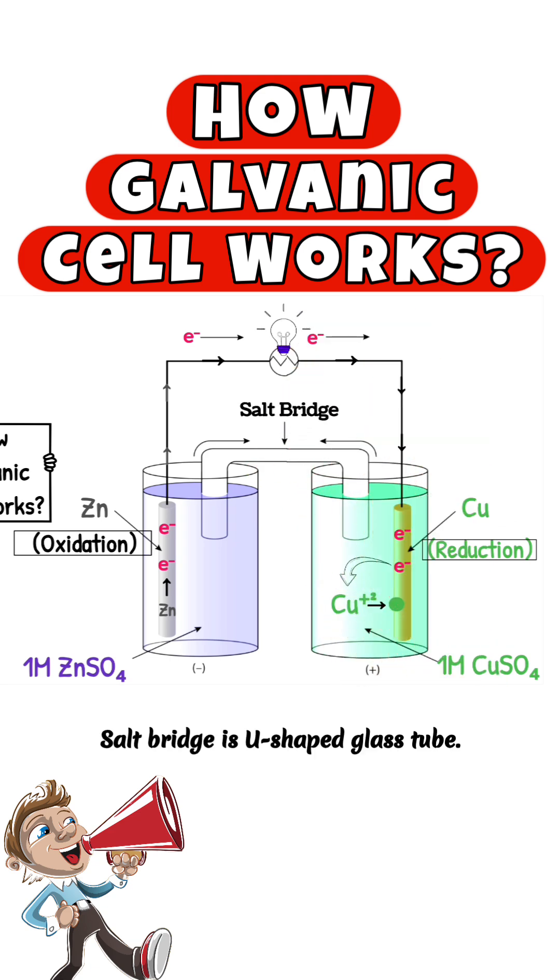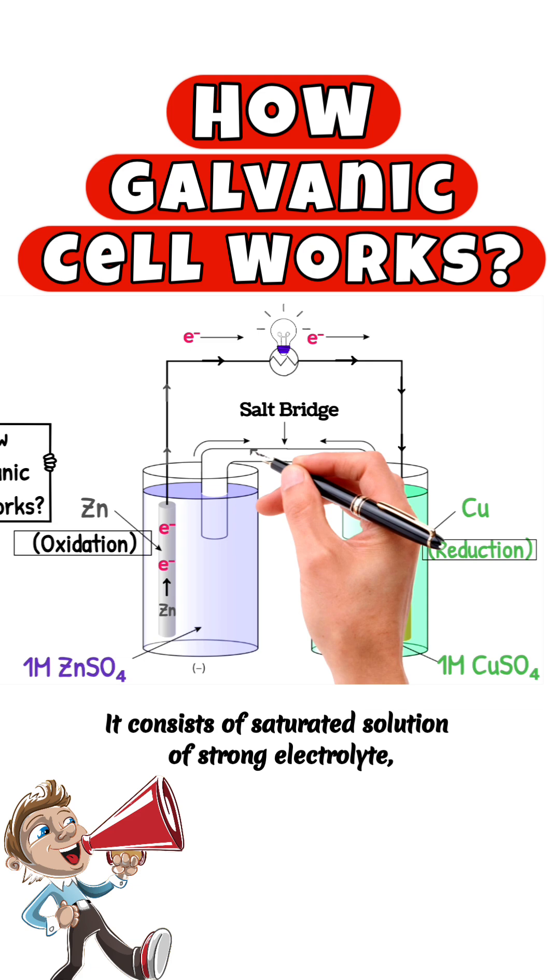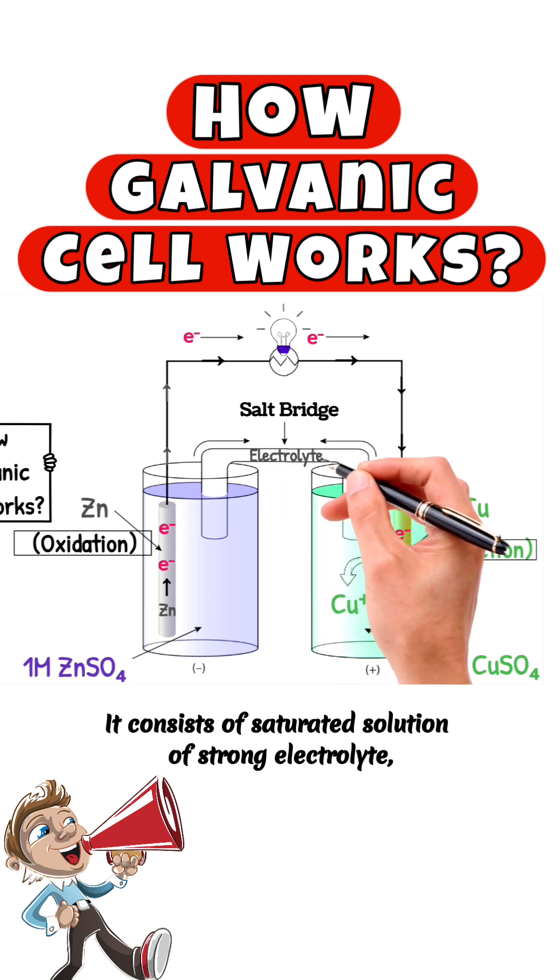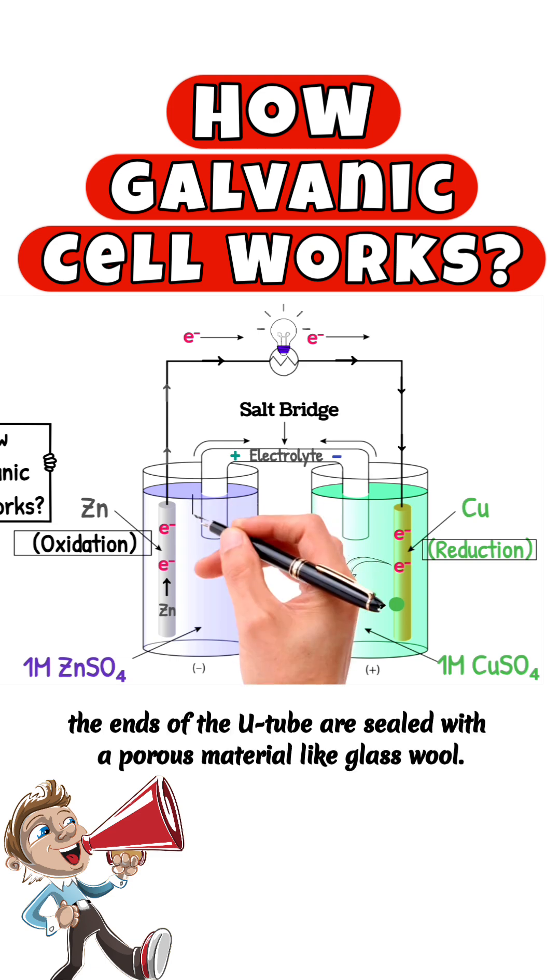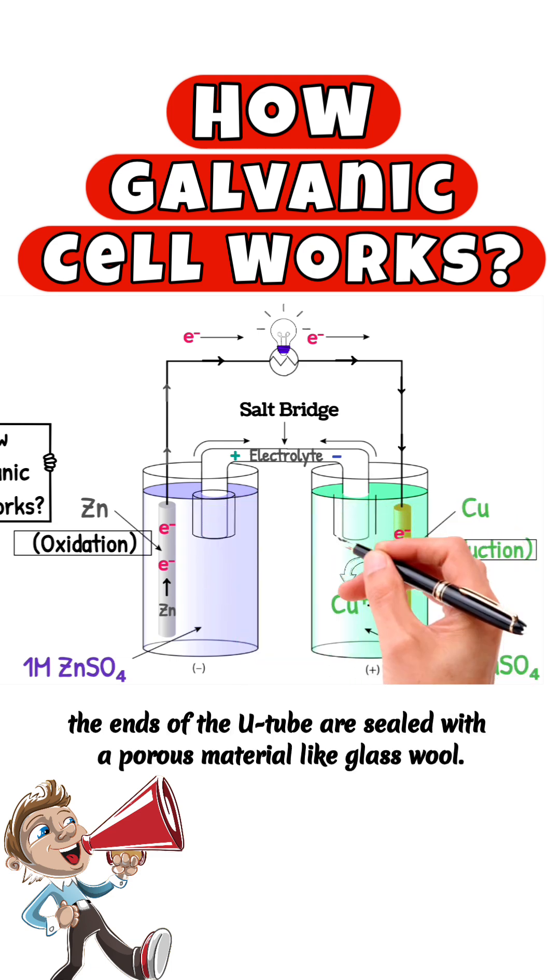Salt bridge is a U-shaped glass tube. It consists of saturated solution of strong electrolyte containing positive and negative ions, supported in a jelly-type material. The ends of the U-tube are sealed with a porous material like glass wool.